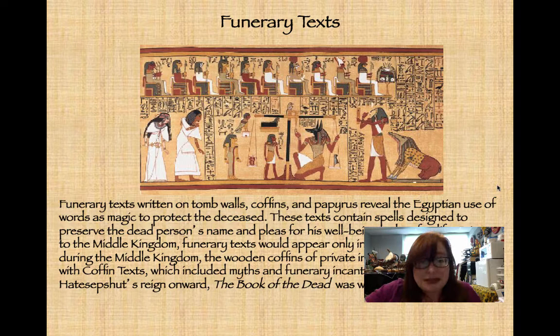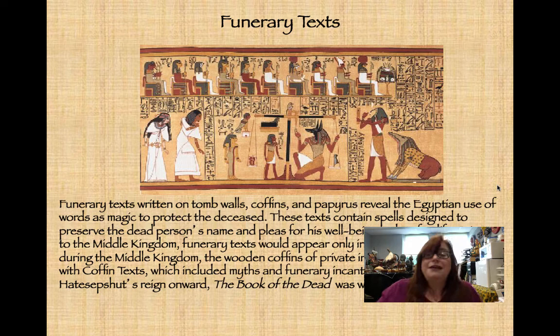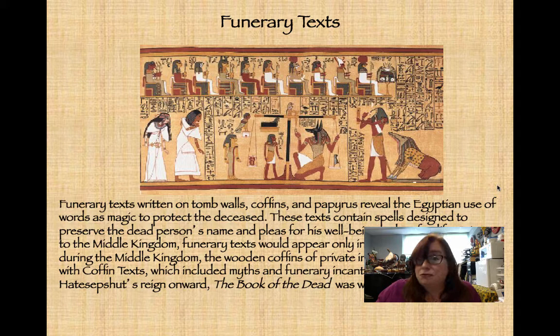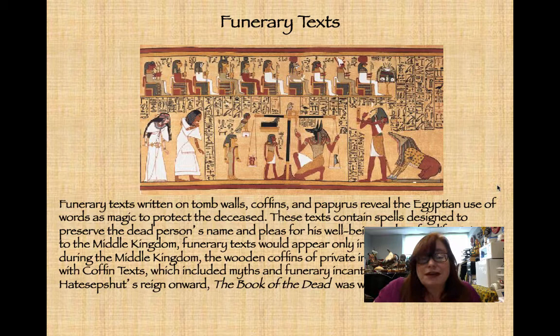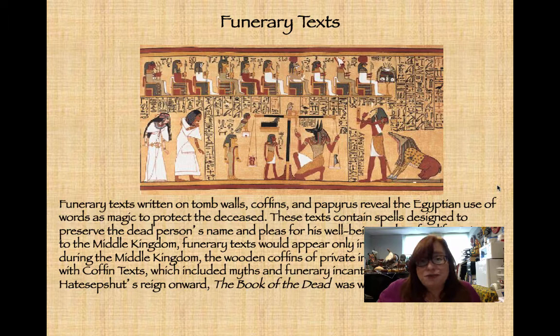In the beginning, only the king had funerary texts — on the walls of his coffin in early dynastic culture. Shortly after, they extended this to members of the court, queens, and important officials. In the Middle Kingdom, private individuals would have the texts on the insides and outsides of their wooden coffins. From Hatshepsut's reign onward — the New Kingdom, 18th dynasty — texts were written on papyrus scrolls for people who couldn't afford lavish tombs, which would then be tucked into the coffin.